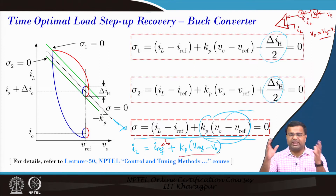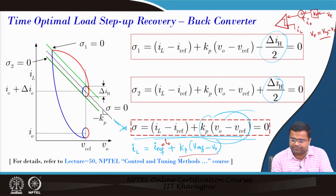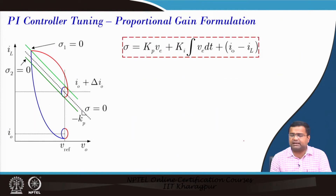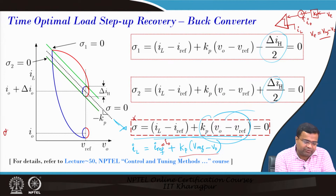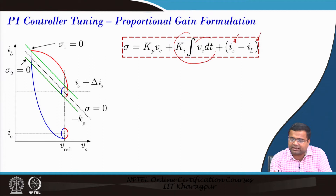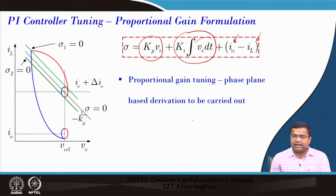Only proportional control may not ensure zero steady-state error, so we modify sigma. The Kp-times-Verror term is present; rewriting the full equation gives: sigma = I0 minus IL, incorporating an integral gain term to eliminate steady-state error. It will look like a proportional-integral (PI) controller in current mode control with load feed-forward.